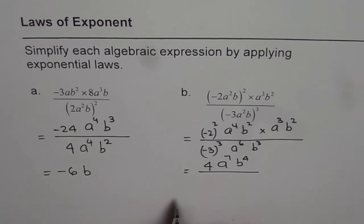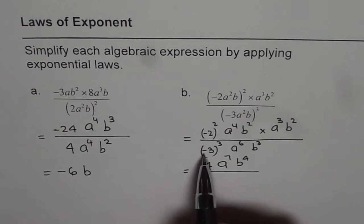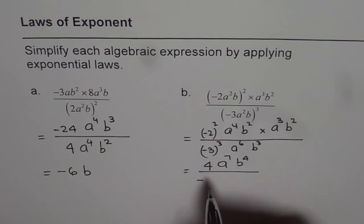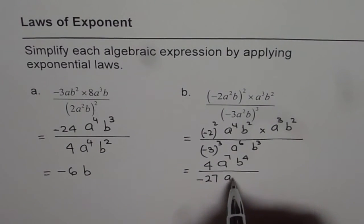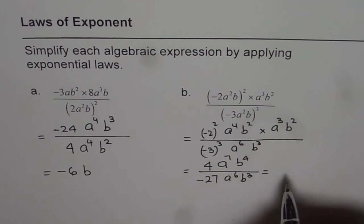In case of denominator, we have minus 3 cubed. Now negative times negative times negative will result in negative. So we get negative for that. 3 cubed is 27, a to the power of 6 and b to the power of 3.